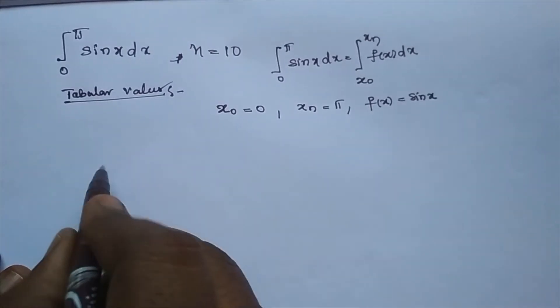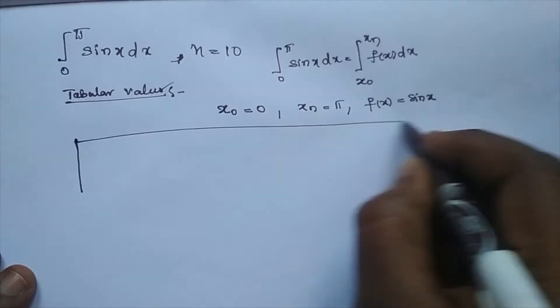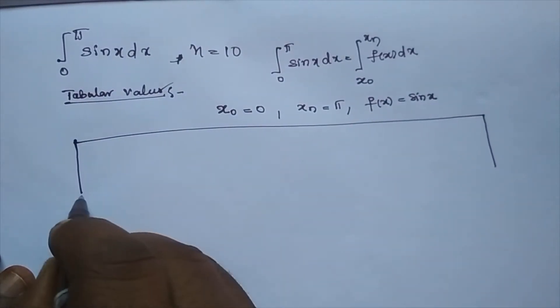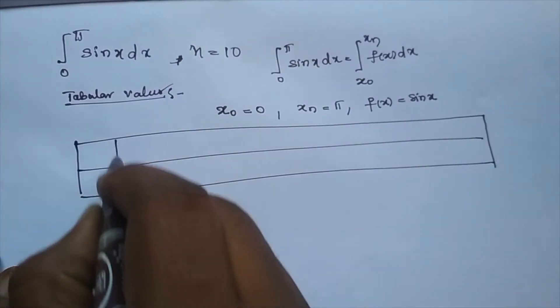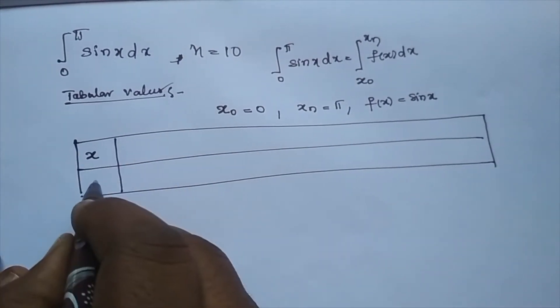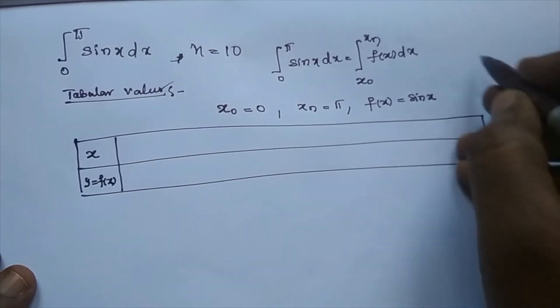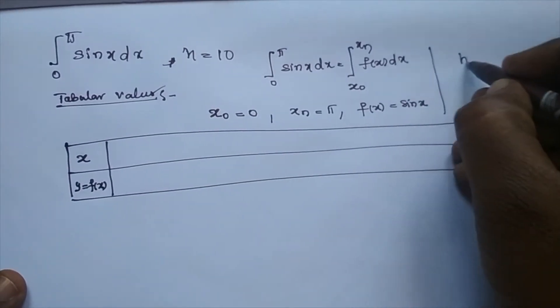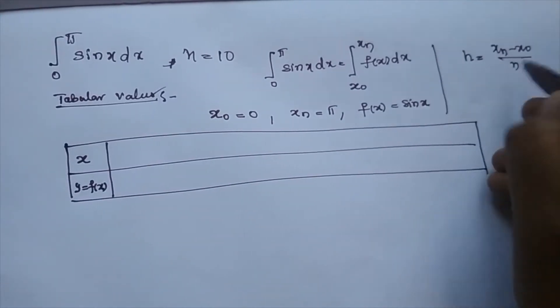Now I am going to take tabular values. Before we construct the tabular values, we should know the h value. These are the x observations. These are the y equals f of x observations. So how to calculate h value? h is equal to xn minus x0 by n. This is the formula.